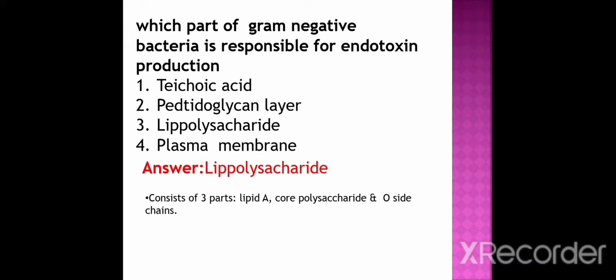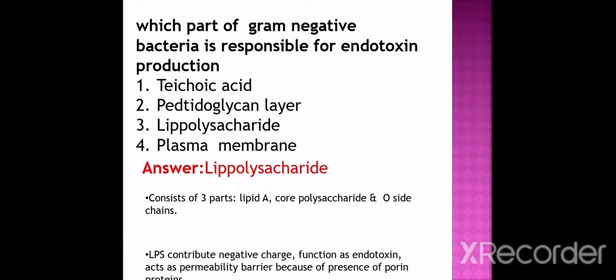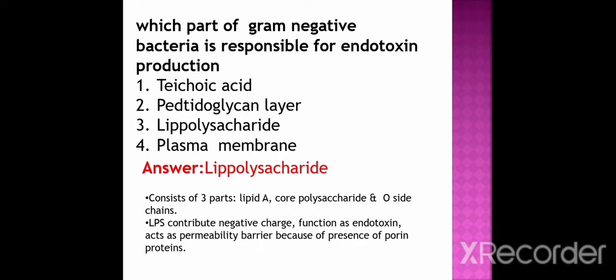Lipopolysaccharide consists of 3 parts: Lipid A, core polysaccharide, and O-antigen chains. LPS — lipopolysaccharide — contributes a negative charge, functions as an endotoxin, and acts as a permeability barrier because of the presence of porin proteins.